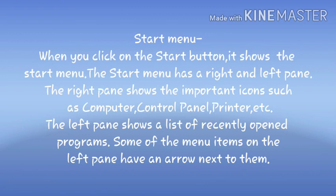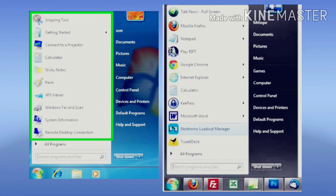The Start menu has a right pane and a left pane. The right pane shows important icons such as Computer, Control Panel, Printer, etc. The left pane shows a list of recently opened programs. Some of the menu items on the left pane have an arrow next to them.